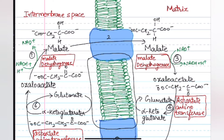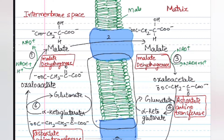The malate molecule, which is carrying the electrons, will cross into the mitochondrial matrix. This transport takes place with the help of the malate-alpha-ketoglutarate transporter. This transporter is an antiporter — a transporter molecule which transports two solutes at a time in different directions.